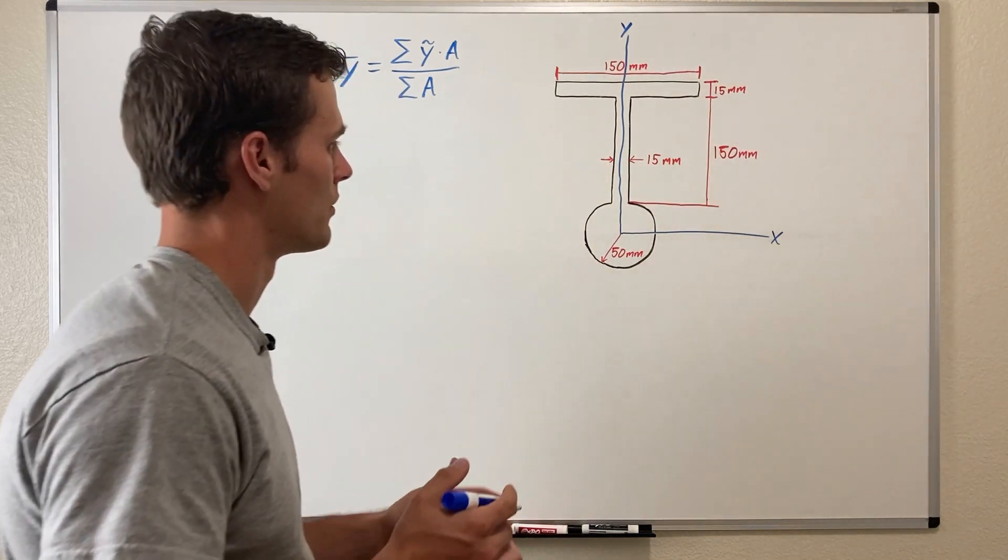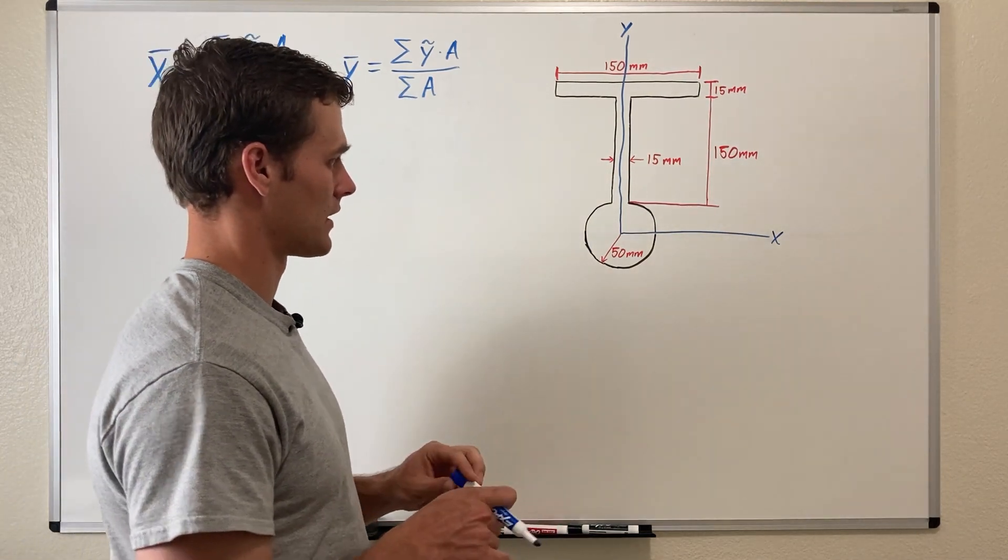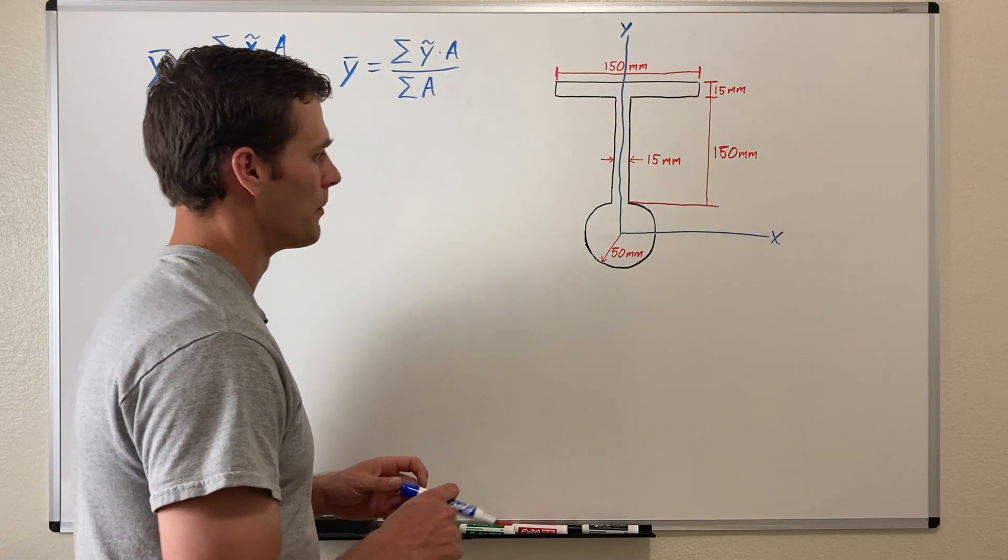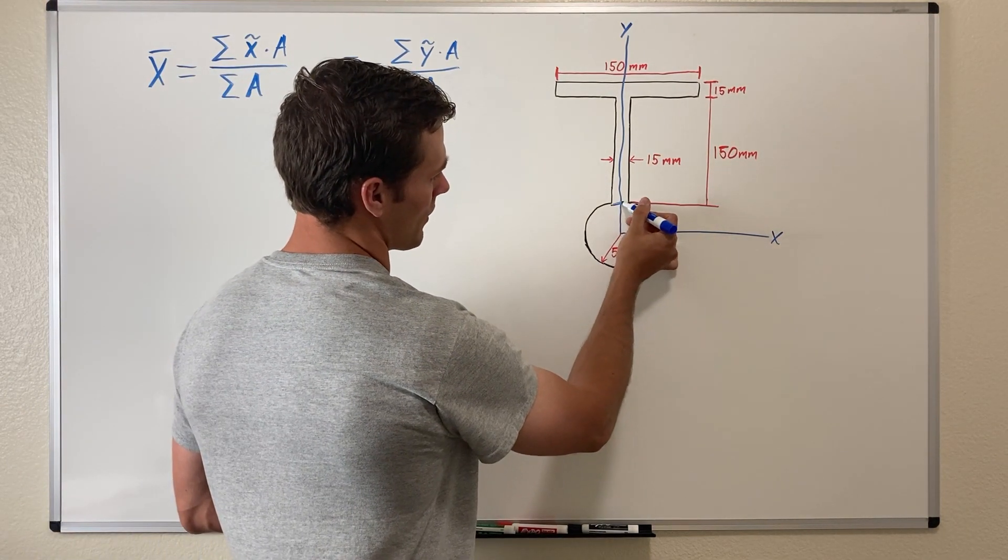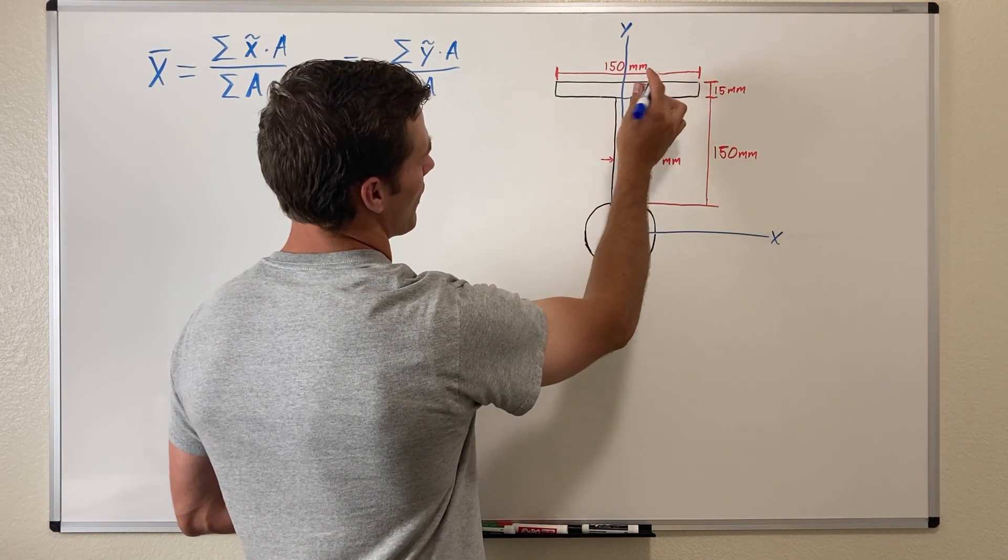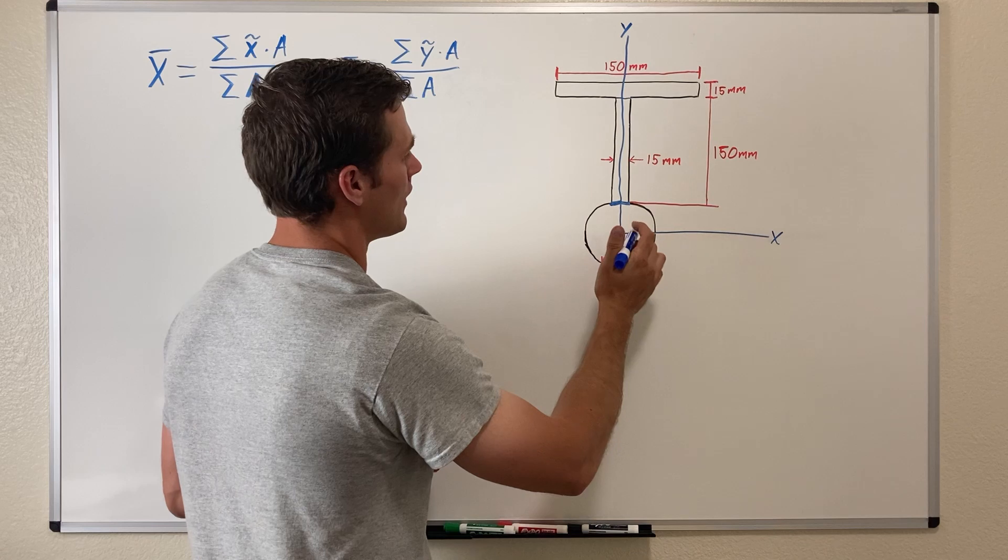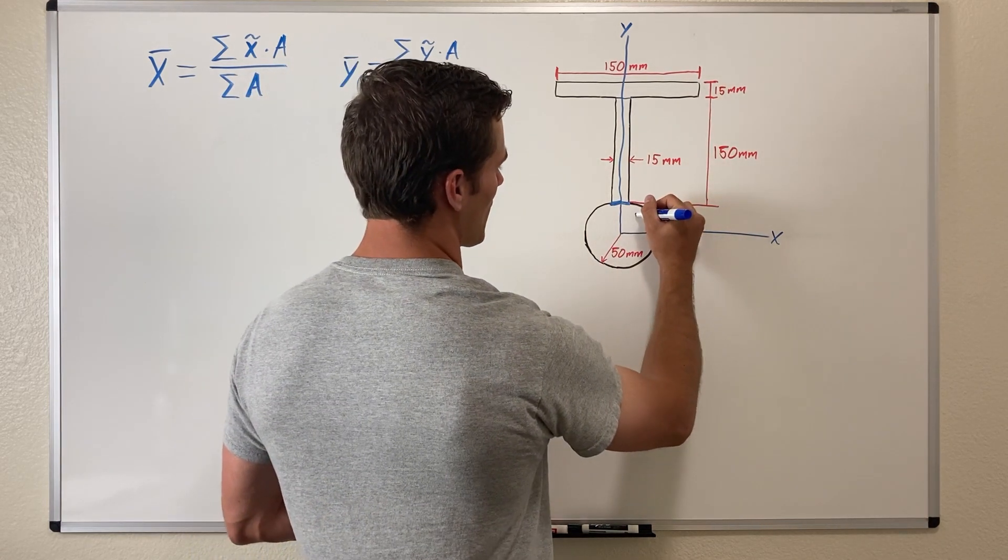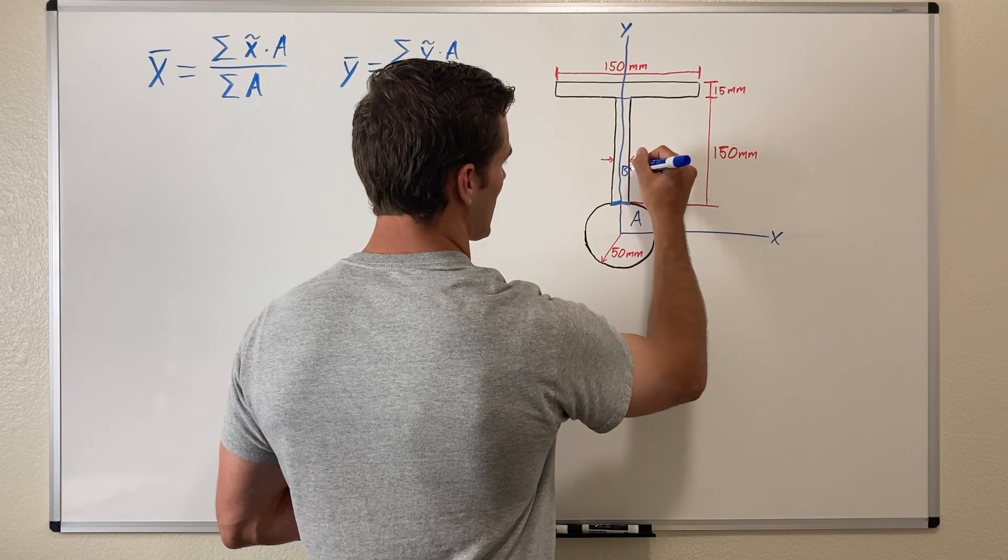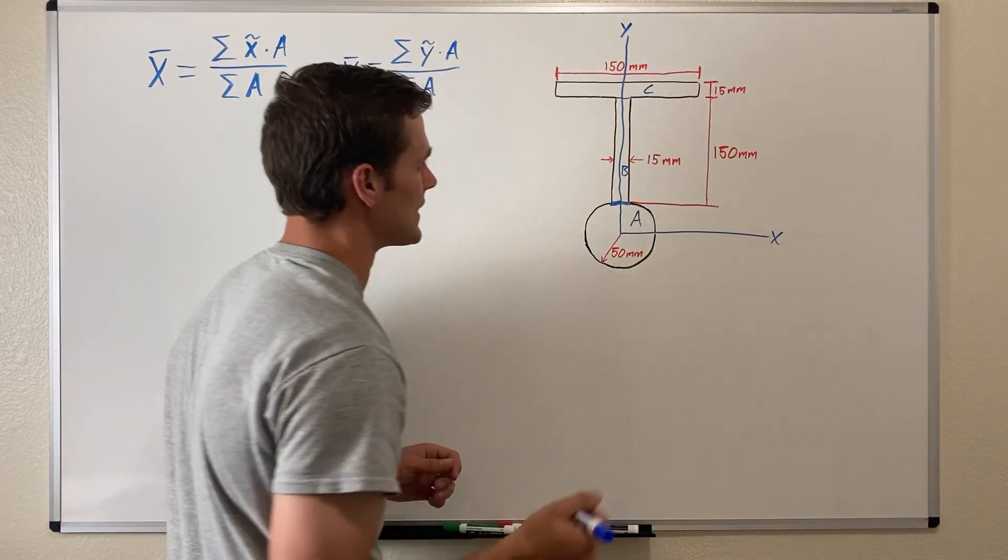The next step is to break this object into its composite parts. We can see that this part is going to be our circle, and this part is going to be a rectangle and another rectangle. We're going to label this circle being A, this middle rectangle being B, and the top rectangle being C.